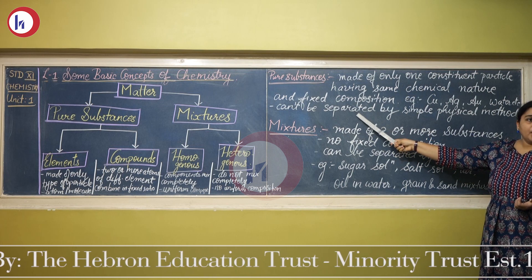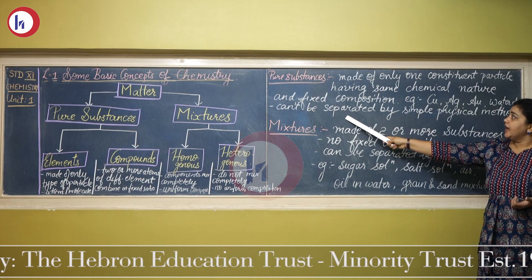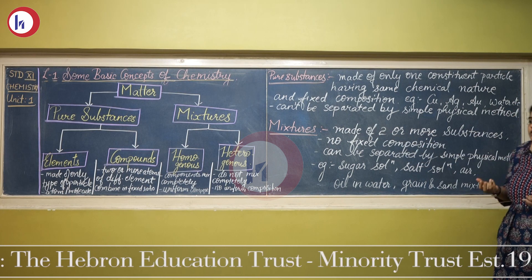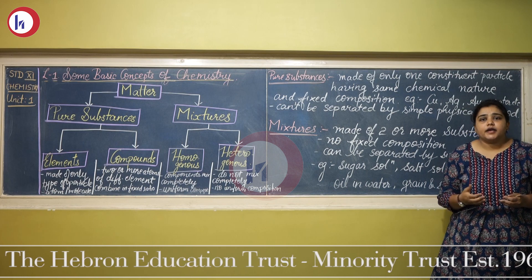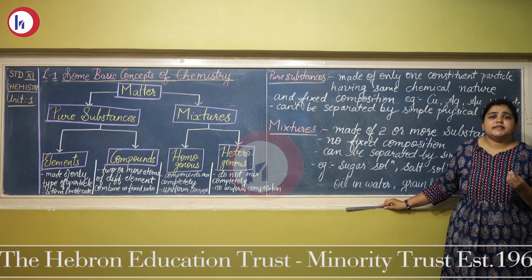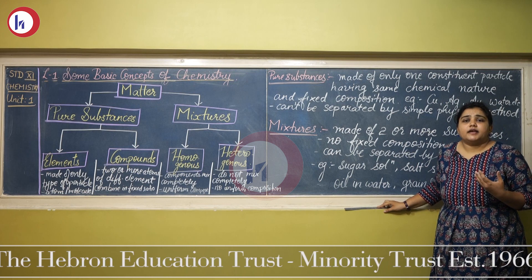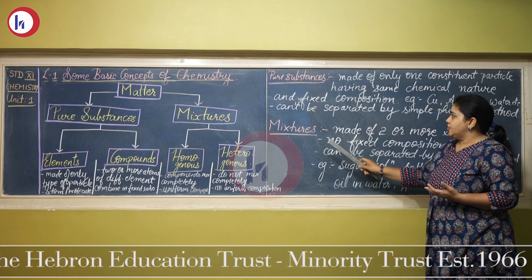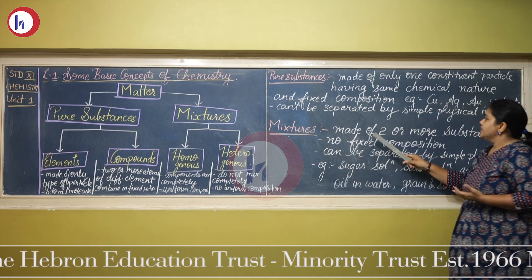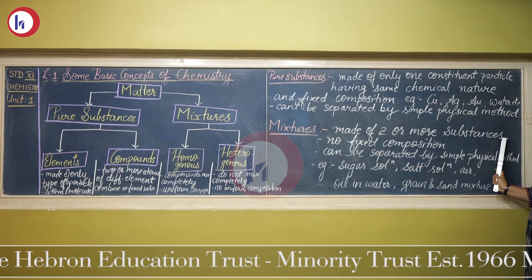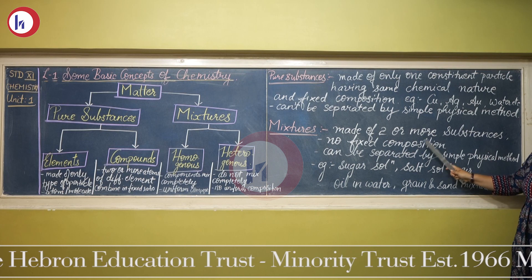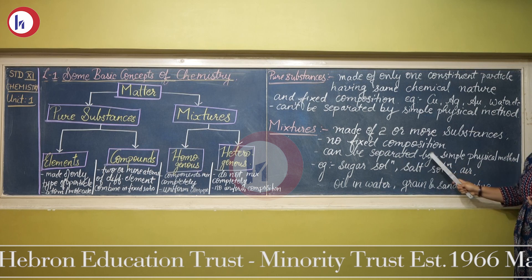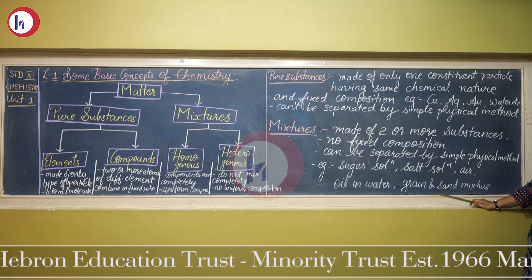Another property of pure substances is that they cannot be separated by simple physical methods — you cannot separate their constituent particles by hand-picking or physical methods like crystallization, distillation, or evaporation. Mixtures, on the other hand, are made of two or more substances that do not have a fixed composition and can be separated by simple physical methods.